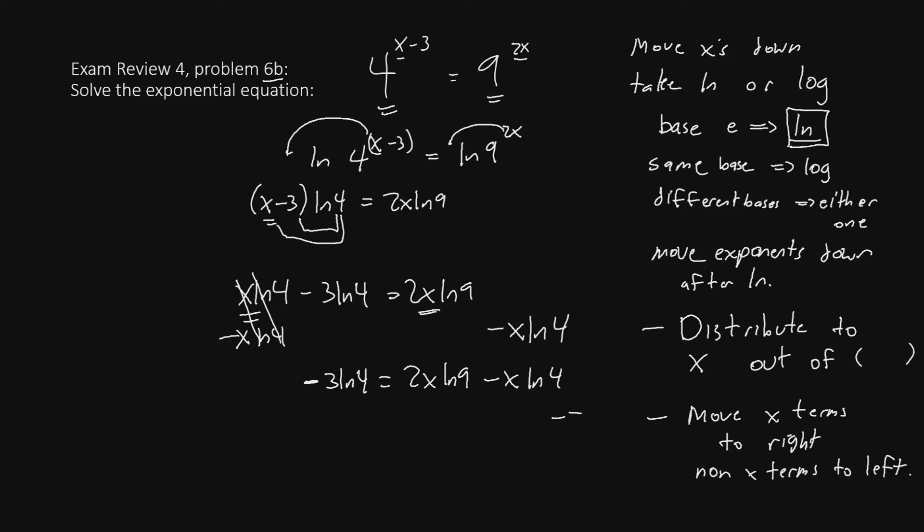Now we can factor, now that we have the x's on the same side. So let's factor out x on the right side, pull out the x, and left behind we'll have 2 ln 9 since we pulled the x out. And if we pull the x out of the negative x ln 4, we'll have negative ln 4. On the left side, nothing changes. We just have negative 3 ln 4.